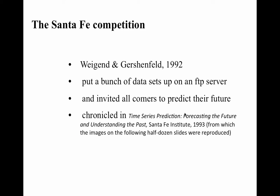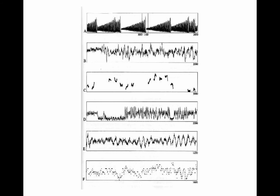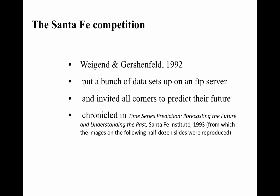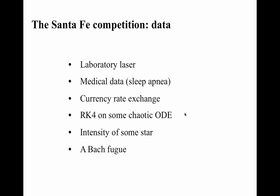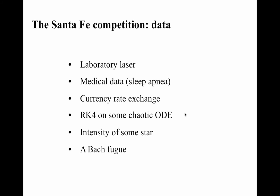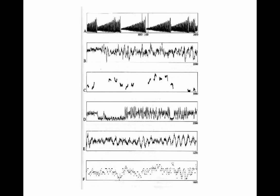A few years later, Andreas Weigand and Neil Gershenfeld decided to run a time series prediction competition. They took a bunch of data sets, put the first chunk of each up on an FTP server, reserving the last chunk for evaluation of all the predictions submitted. The data sets included: a laser time series that bursts and collapses; a sleep apnea data set; currency exchange rates with a visible day-of-week and weekend pattern; a fourth-order Runge-Kutta ODE; an astrophysical data set; and a Bach fugue — since both Neil and Andreas are musicians, they were intrigued to find out whether one could predict the future course of a fugue.